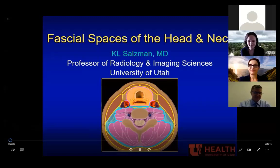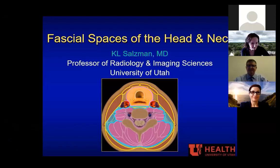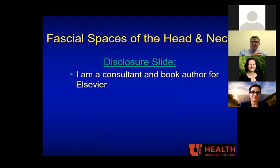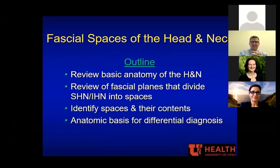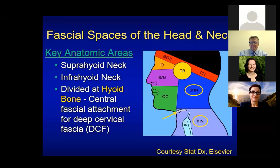Good afternoon. I'm delighted to be part of this series. I want to thank the organizers, Dr. Christine Glastonbury, the ASHNR Education Committee Chair, and Dr. Callie Robson, the ASHNR President, for the opportunity to speak. I'll be talking about the fascial spaces of the head and neck. I'll start by reviewing basic anatomy of the head and neck, looking at the fascial planes that divide the suprahyoid and infrahyoid neck into spaces. The neck is divided at the hyoid bone, which is the central fascial attachment for the deep cervical fascia — an important anatomic landmark.